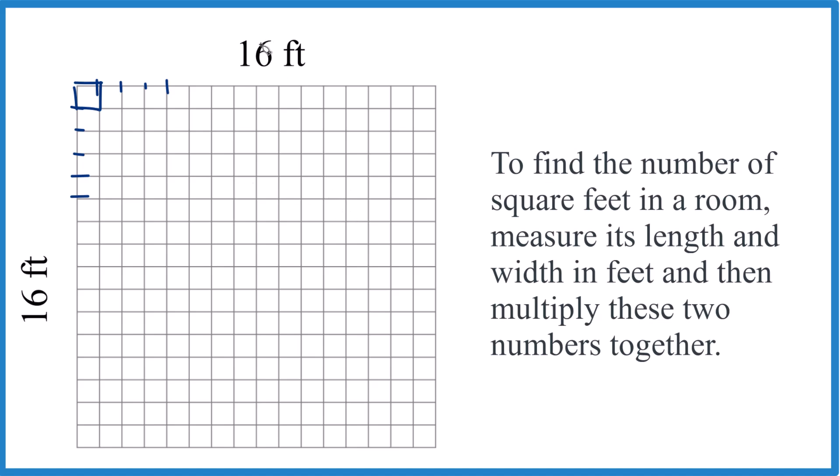So all you're doing is taking 16 feet times 16 feet like this. When you multiply 16 by 16 you get 256, and feet times feet, that's feet squared or square feet, and that's all you need to do.